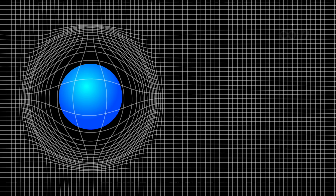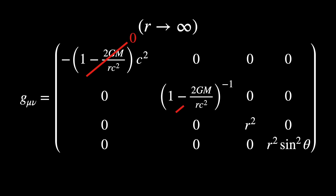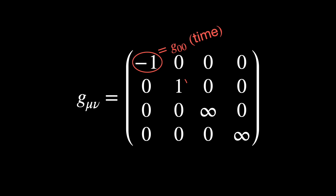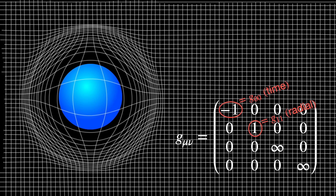Before moving on, there are three important things to notice. First: a point at infinity. There are two possible Schwarzschild metrics — one for points in the interior, and another for points in the exterior. Using the exterior Schwarzschild metric as R tends to infinity, the time and radial entries become identical to those of the Minkowski metric. This makes sense: if you move infinitely far from a massive object, its gravitational influence tends to zero. More technically, spacetime is asymptotically flat — locally Minkowski in the time and radial directions.